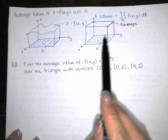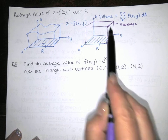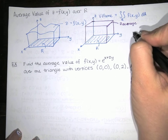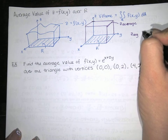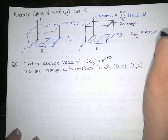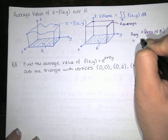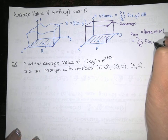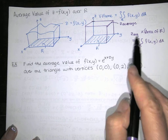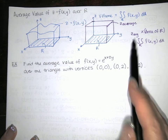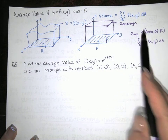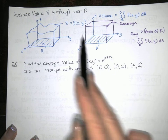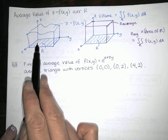Basically, z average times the area of R — that's the volume of the cylinder — has to equal the volume under the surface. And the volume under the surface is the double integral over R of f of xy. So if I want the average value, I take the volume integral and divide by the area of R. That gives the height so that the cylinder has exactly the same volume as the solid under the surface.